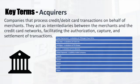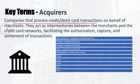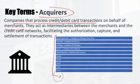Acquirers are the backbone of merchant processing — they provide point-of-sale devices to merchants and facilitate the payment processing process. They are companies that provide credit and debit card transactions on behalf of merchants. These are the prime or major acquirers that exist.